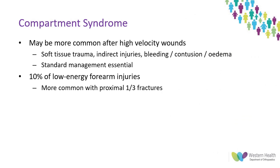Compartment syndrome is seen post gunshot wound and is often associated with fracture, increased soft tissue injury, or vascular injury. Diagnosis and management remains unchanged from compartment syndrome from other mechanisms. Our index of suspicion may be increased with the mechanism or the location of the fracture. The literature remains relatively limited, but proximal fractures of the forearm are more commonly associated with compartment syndrome.